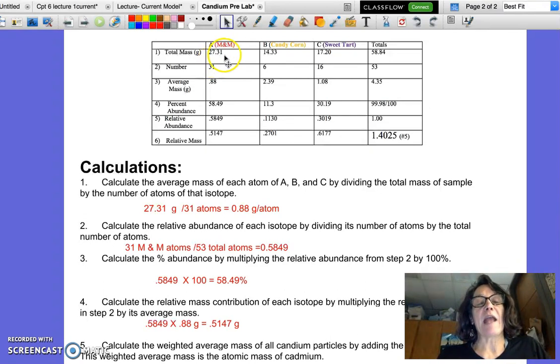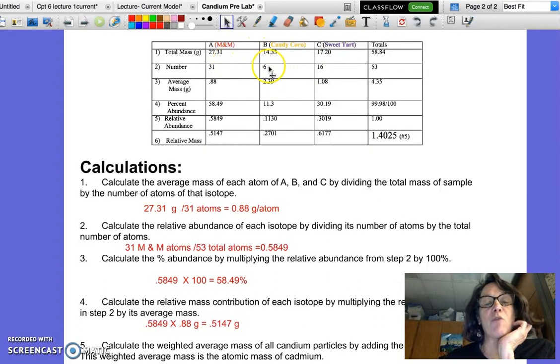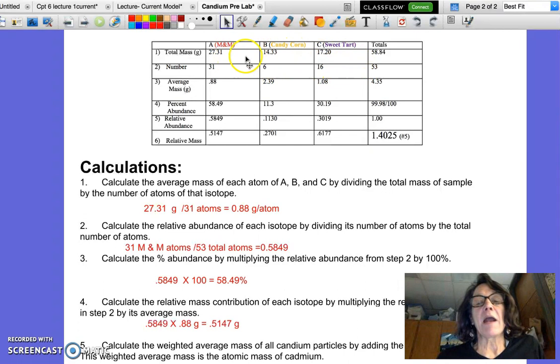All 31 of the atoms of M&M together had a mass of 27.31 grams. And then you can see that the total sample of candy corn and the total sample of sweet tarts was massed as well. So this is the only data that we're actually collecting in lab. Everything else is a calculation based on that data.